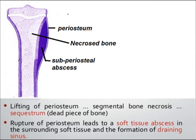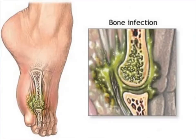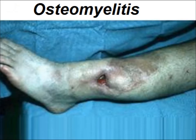Sequestrum forms, and rupture of the periosteum leads to a soft tissue abscess in the surrounding tissue, followed by formation of draining sinuses. In children, because of communication between the metaphysis and joint space, there is septic arthritis. This bone infection can extend into the bone and surrounding tissue — this is the case of acute osteomyelitis with visible draining sinuses.